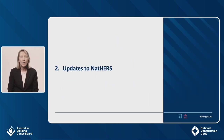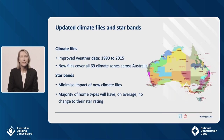Now I'm going to take you through how NatHERS is supporting the recent changes to NCC 2022. The climate files used to calculate thermal star ratings for NatHERS have been updated with more recent and accurate weather data. This is an important improvement, as the climate interacts with the design features of a building to determine the amount of heating or cooling needed to keep the house comfortable. The more accurate the climate data, the better the information supplied to inform the building's design and features.